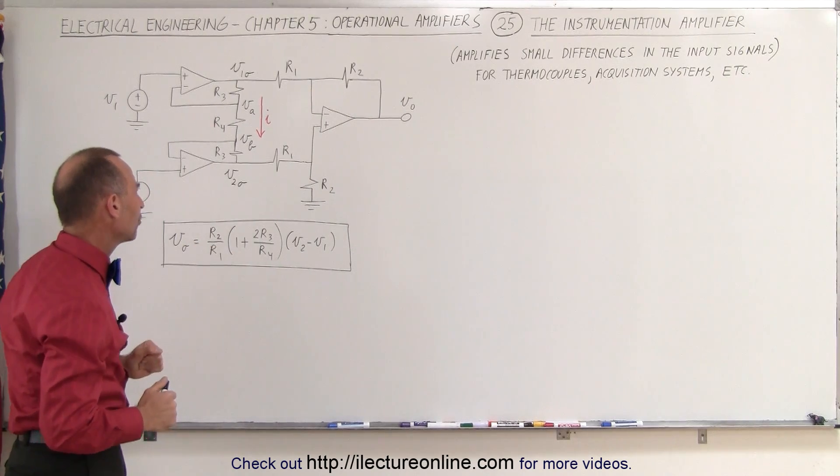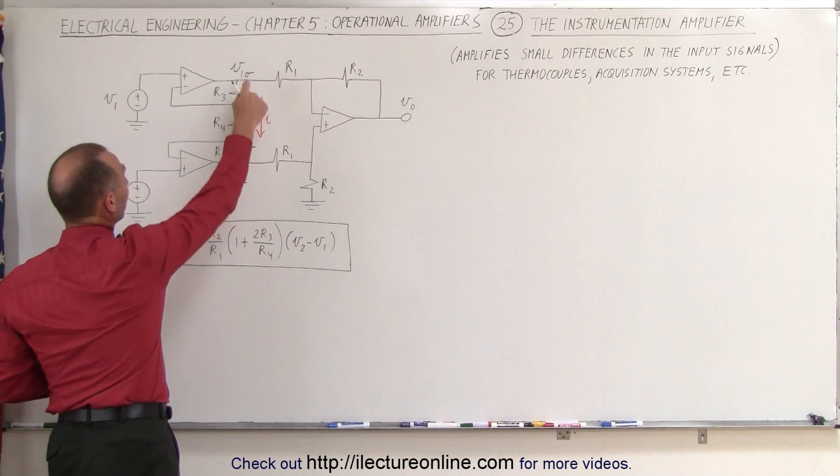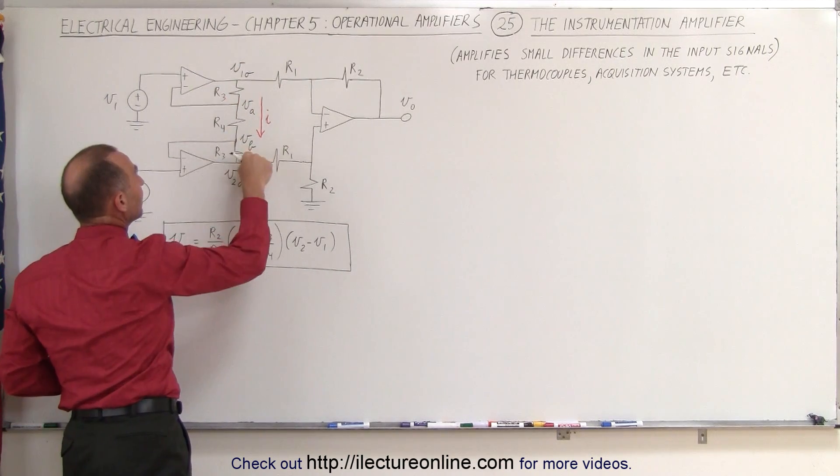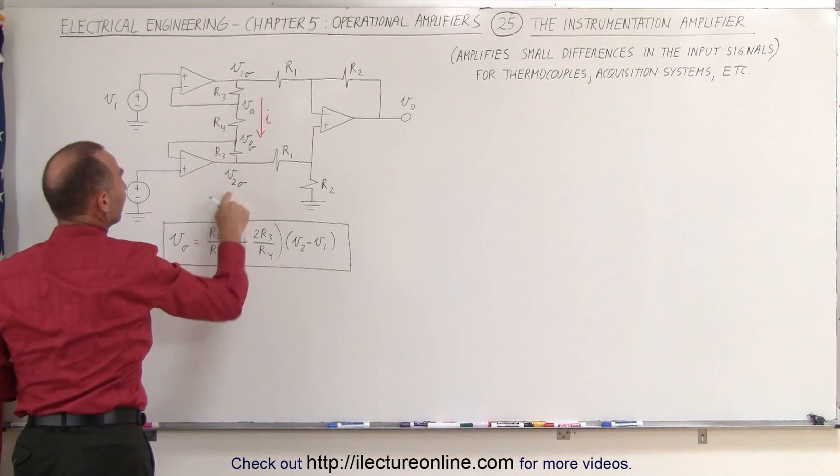Now how did we come up with this equation right here? Well let me try to show you. First of all we're going to define the output of this op-amp and the output of this op-amp right here. So we have V1 output and V2 output.